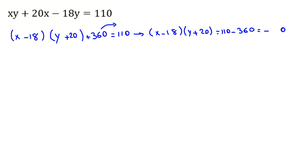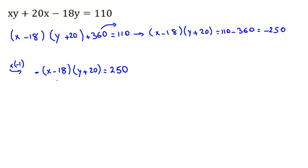Which is negative 250. Because it is negative, we multiply by negative 1, so we have negative x minus 18, times y plus 20, equal to negative 250, which becomes positive 250. Applying the negative 1, we get 18 minus x, times y plus 20, equal to 250.